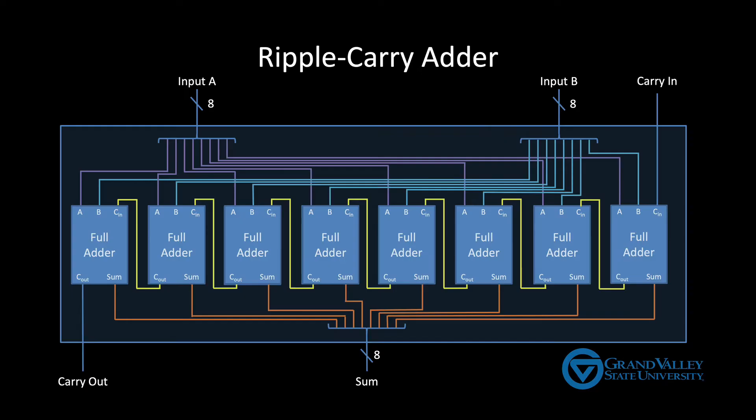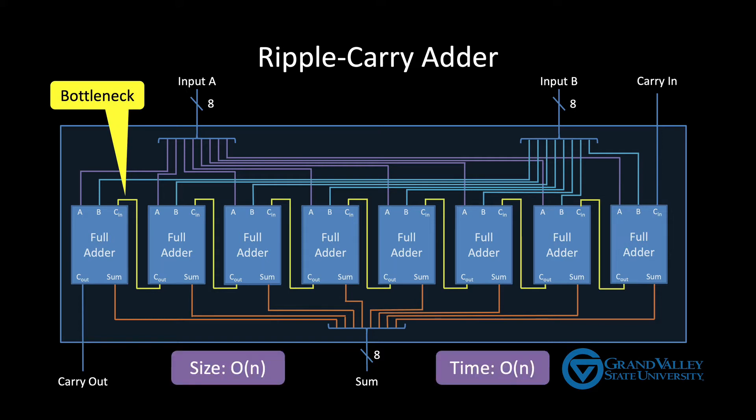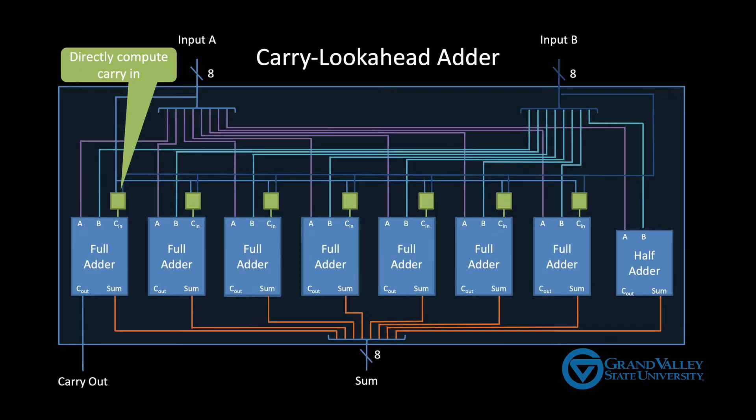In the previous video we saw that the carries created a bottleneck in the ripple carry adder limiting its performance to a comparatively slow big O of N. We addressed that bottleneck by adding hardware to directly compute each carry in.